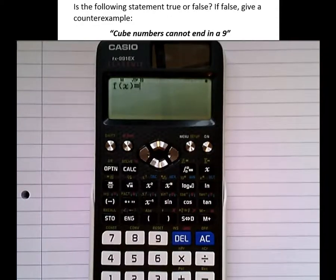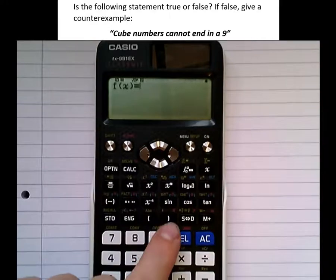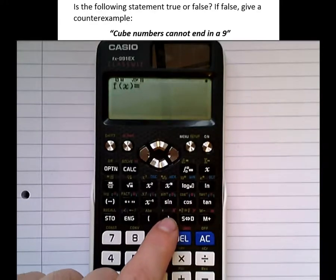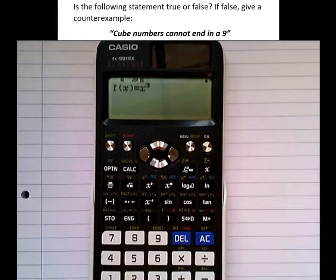We're looking for cube numbers, so we're going to enter f of x equals x cubed. So to get the x, press alpha. There it is. Then above the bracket, there's an x. Cubed. Press equals to enter that.